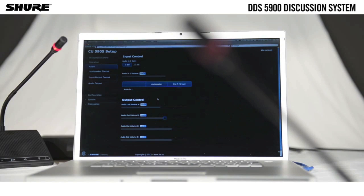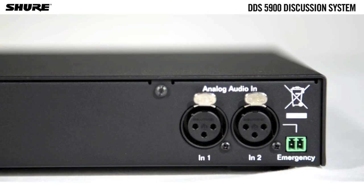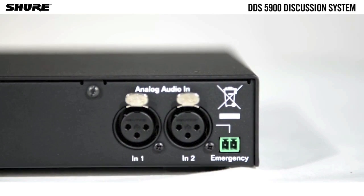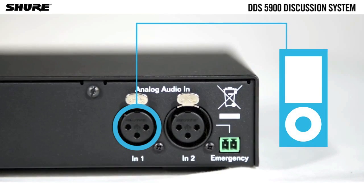As an example, while distributing two interpreted language channels on input 1 and 2, the other two outputs could be used for connecting an external PA system or recording the event. Analogue input 1 can be used for connecting an external source, such as an audio player.